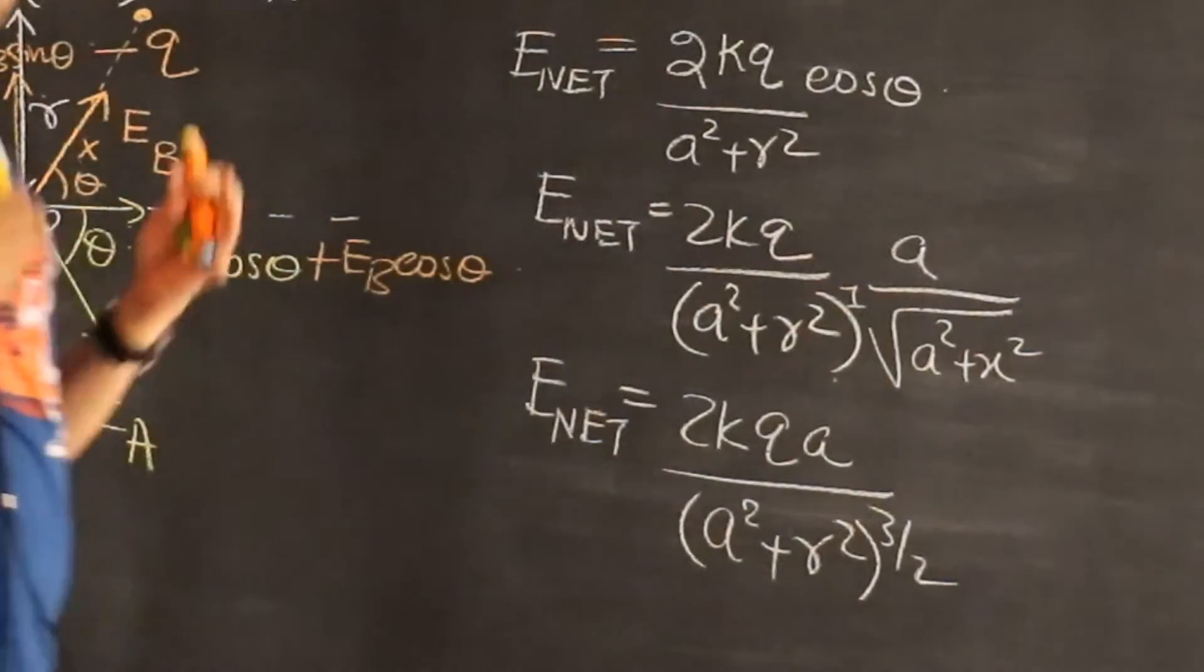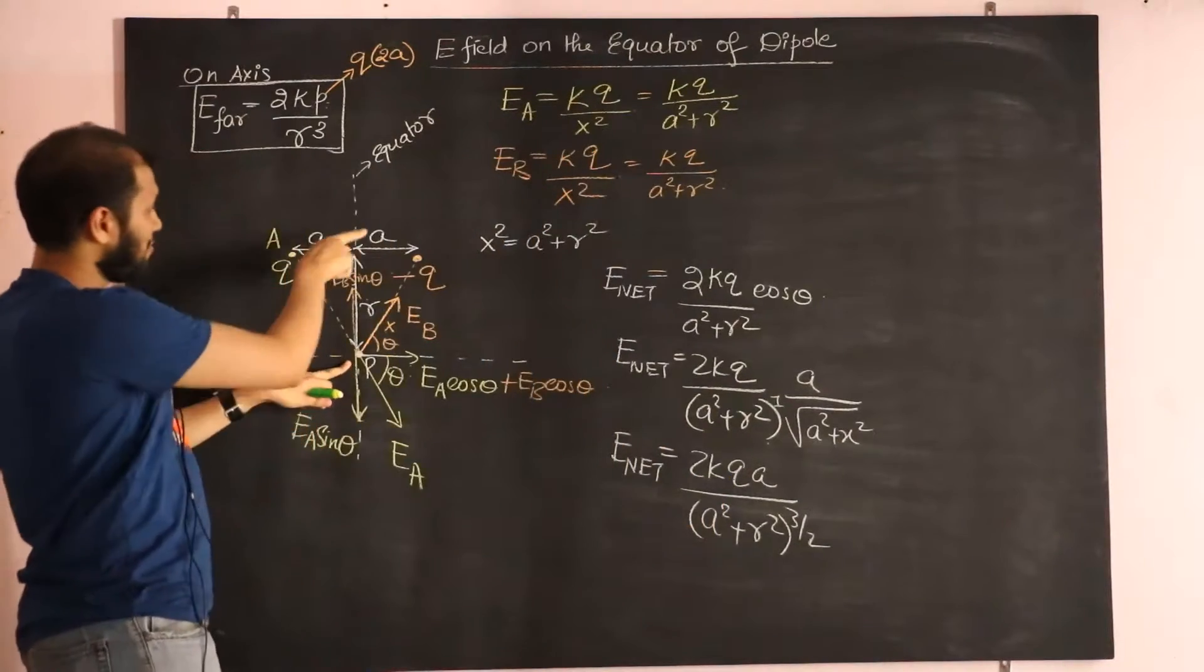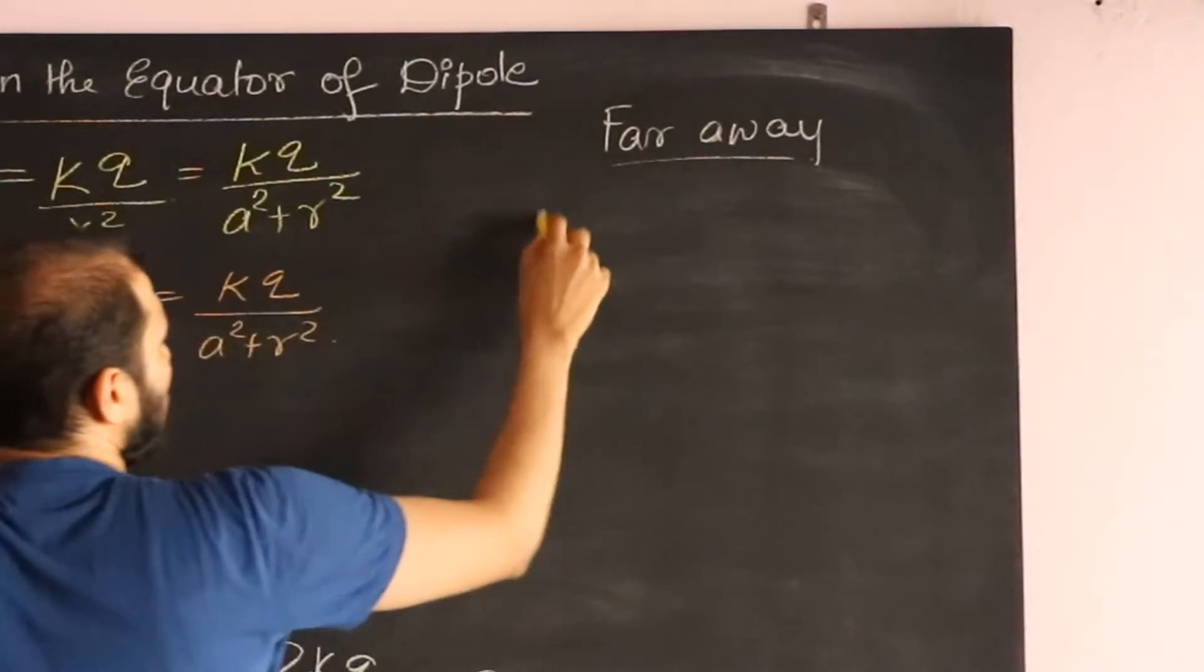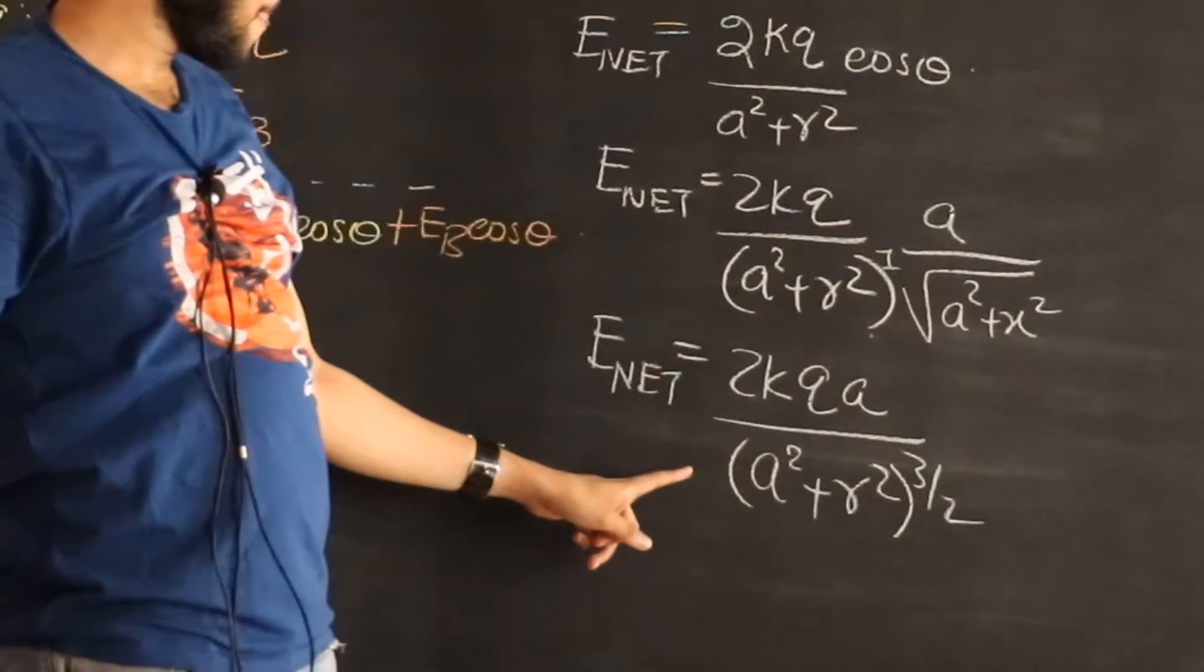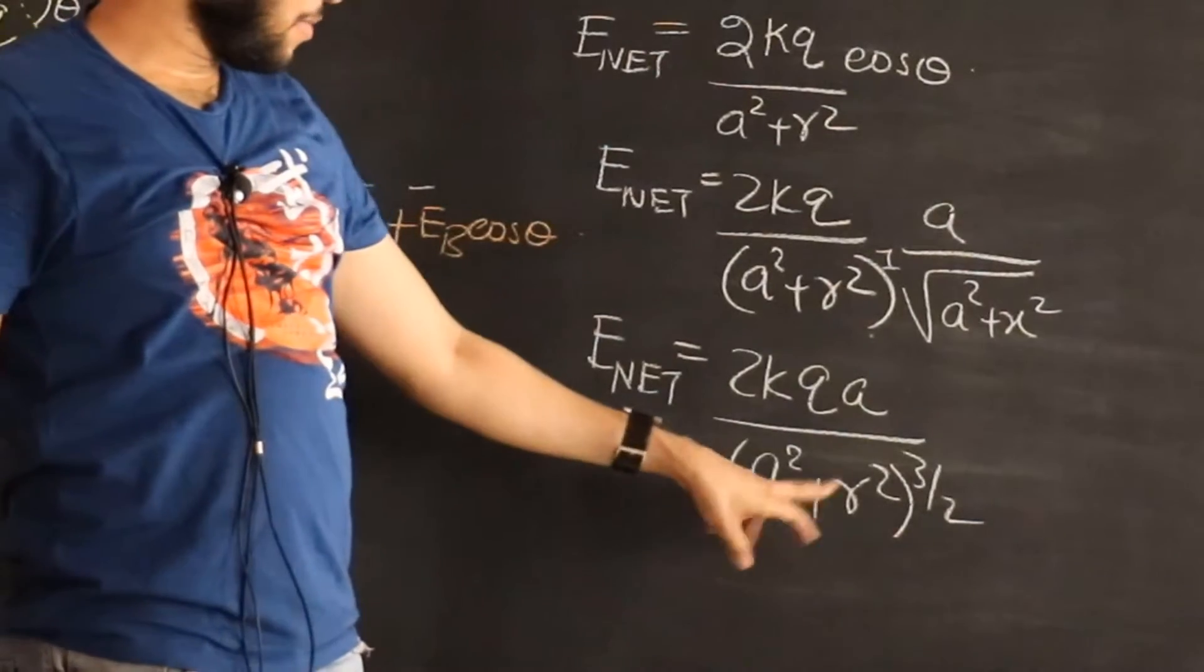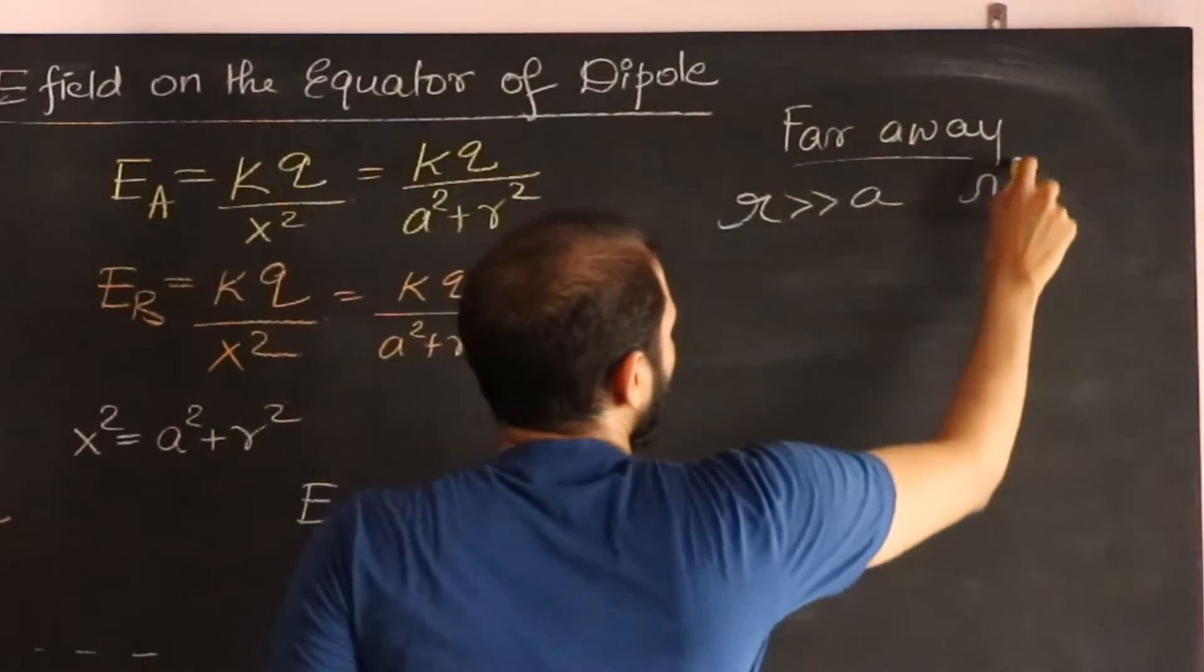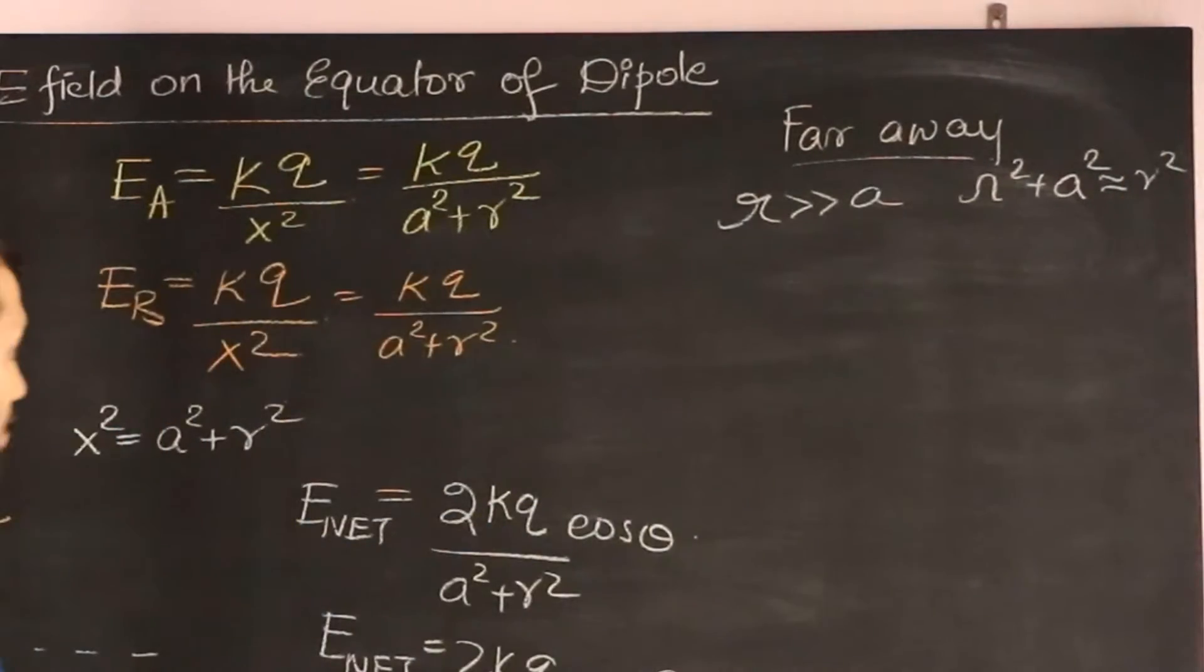But our goal is to go far away, so let's now use the fact that the point P is far away from the dipole system. Therefore we are going R much bigger than A. What approximation can we do? Well, we have already discussed we can't do anything with the A that stays there, but in the denominator I can forget about A square because R square plus A square is pretty much R square. So we're going to use R square plus A square is almost R square.